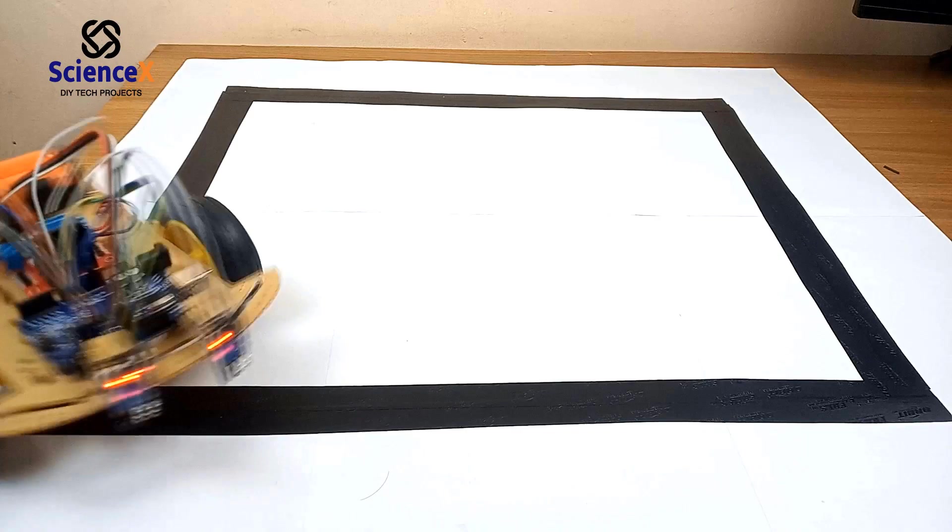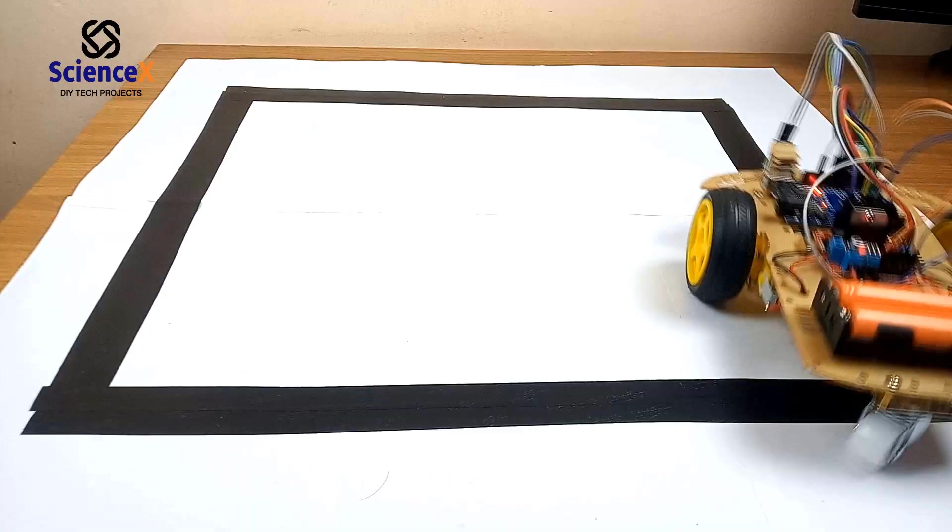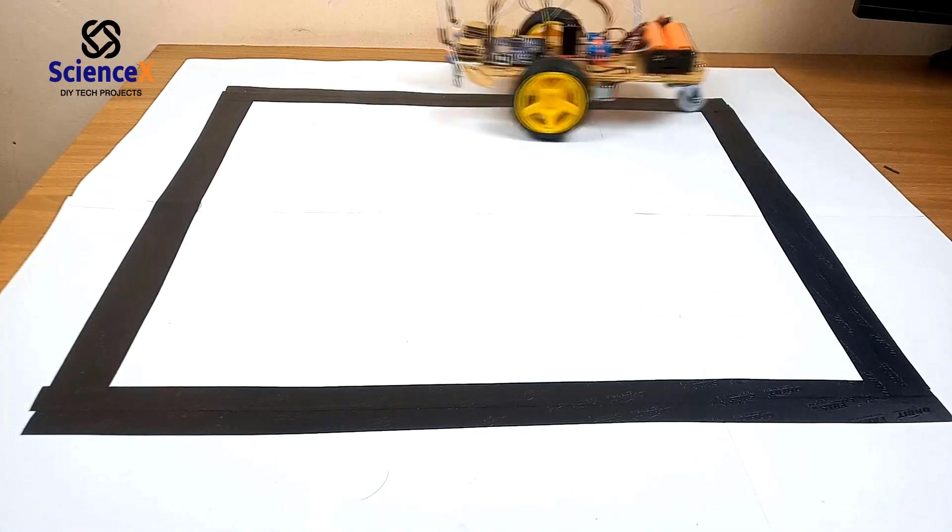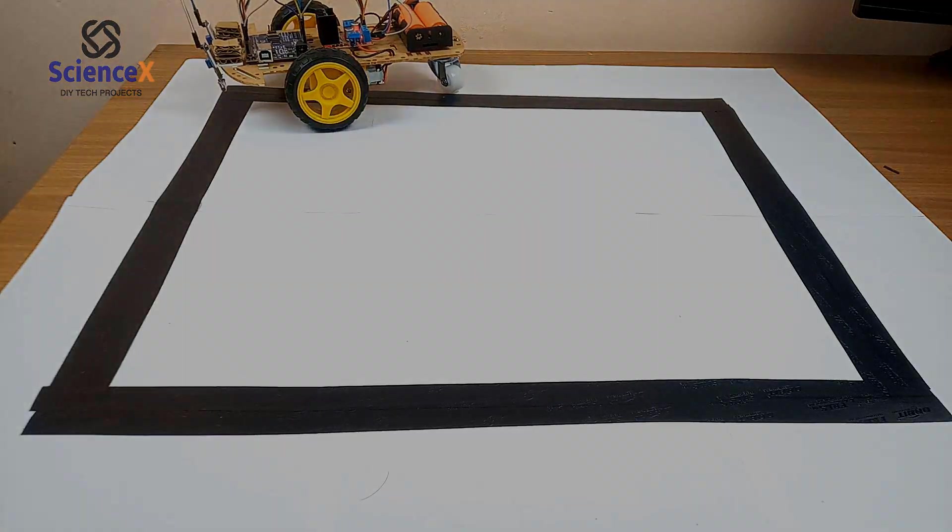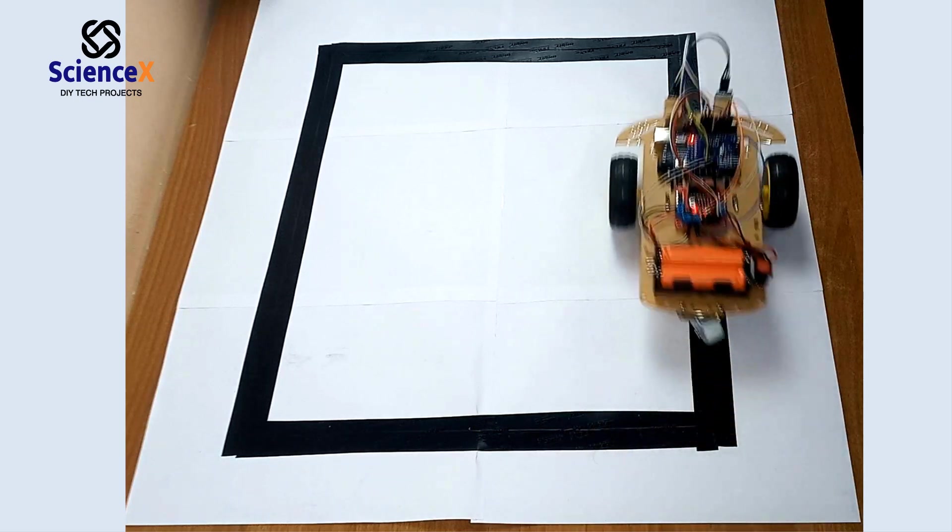Now we coming under the testing. Switch it on. It will move very smoothly and follow black line. Look like this. The robot will work very perfectly and following the black lines as per our need. This is all about the line following robot project.